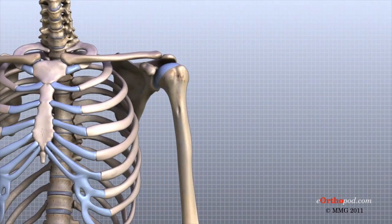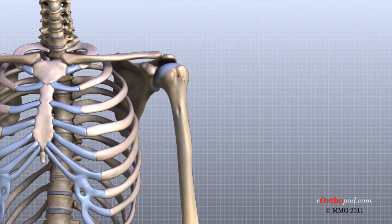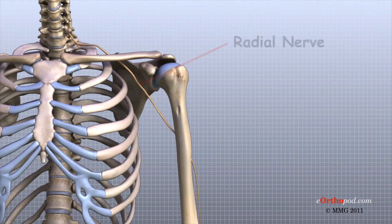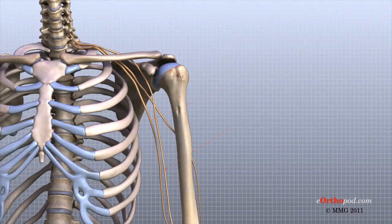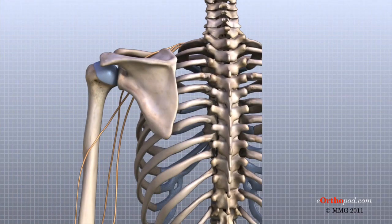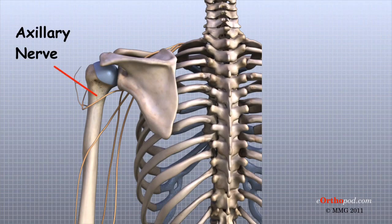The main nerves that travel into the arm run through the axilla under the shoulder. Three main nerves begin together at the shoulder: the radial nerve, the ulnar nerve, and the median nerve. These nerves carry the signals from the brain to the muscles that move the arm, and also carry signals back to the brain about sensations such as touch, pain, and temperature. There is also an important nerve that travels around the back of the shoulder joint to supply sensation to a small area of skin on the outside of the shoulder and motor signals to the deltoid muscle. This nerve is called the axillary nerve.